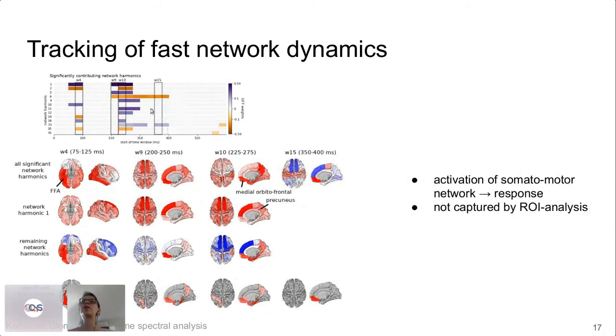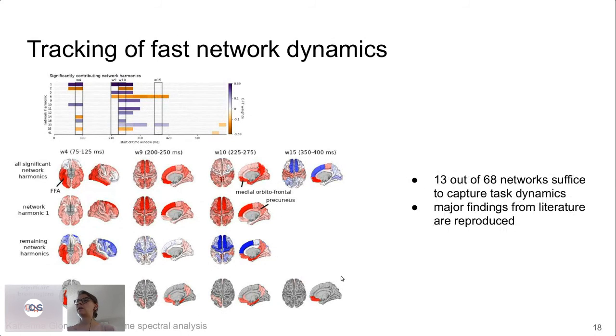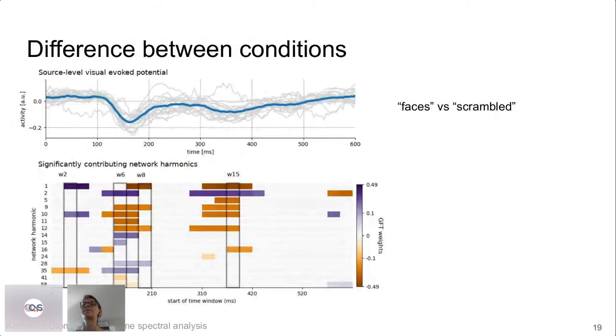In this late time window, as maybe can be expected, you see activity in the somatosensory motor network because people are already preparing to respond to the stimulus. And again, you do not see this when you look at just brain region by brain region. So we only have 13 out of 68 of these network harmonics that suffice to capture the task dynamics, and we reproduce major findings from the literature using these network harmonics.